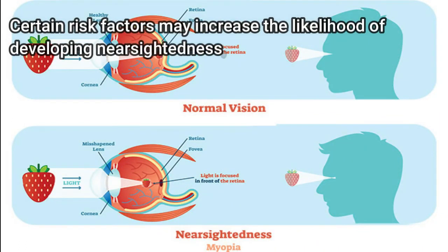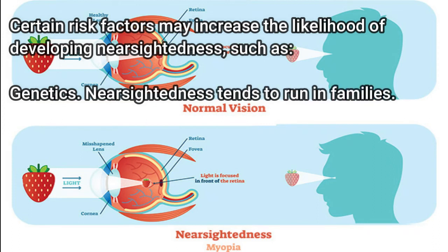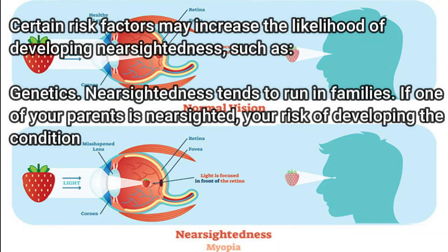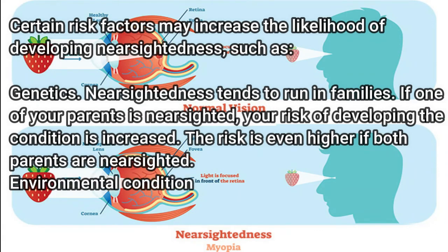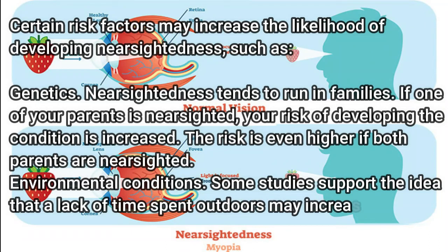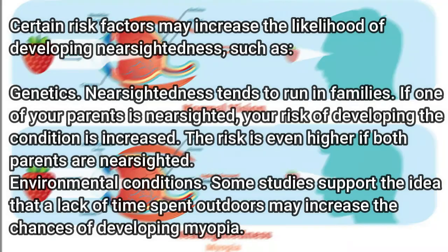Certain risk factors may increase the likelihood of developing nearsightedness, such as genetics — nearsightedness tends to run in families. If one of your parents is nearsighted, your risk of developing the condition is increased; the risk is even higher if both parents are nearsighted. Environmental conditions: some studies support the idea that a lack of time spent outdoors may increase the chances of developing myopia.